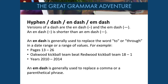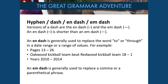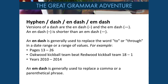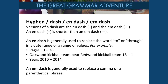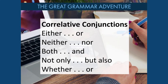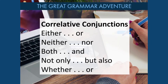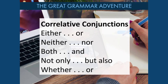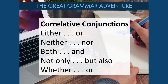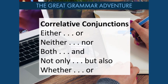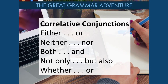An em dash is generally used to replace a comma or a parenthetical phrase. It's also important to be aware of correlative conjunctions: either/or, neither/nor, both/and, not only/but also, whether/or. These are used together — if they are not used together, it's probably not grammatically correct.